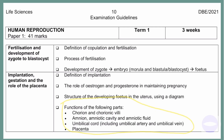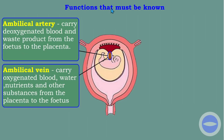The umbilical cord contains two arteries and one vein. The umbilical artery carries deoxygenated blood and waste products from the fetus to the placenta. The umbilical vein carries oxygenated blood, water, nutrients, and other substances from the placenta to the fetus. So the umbilical vein brings substances to the fetus — you must know this difference. The umbilical cord is attached to the placenta.